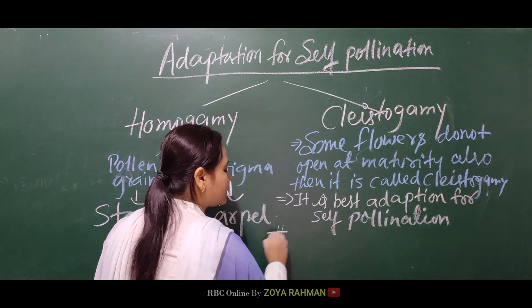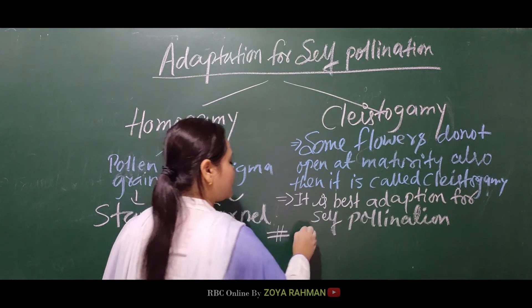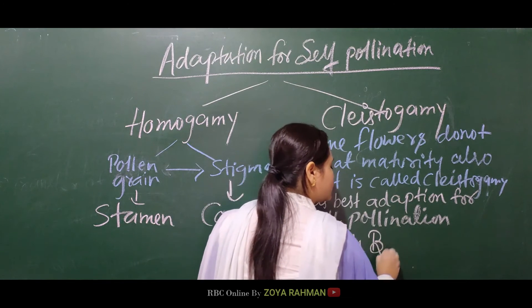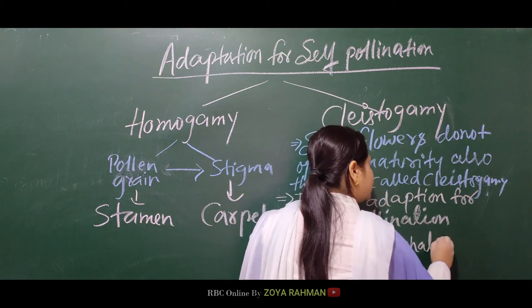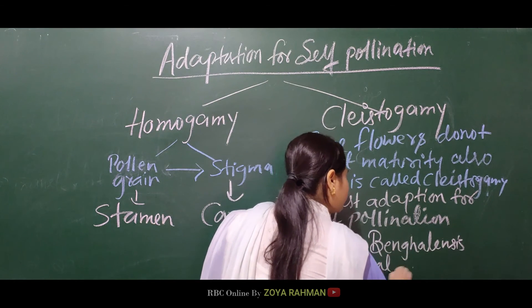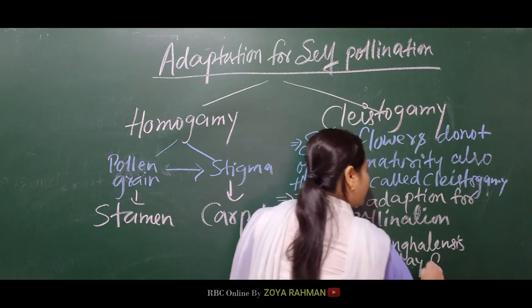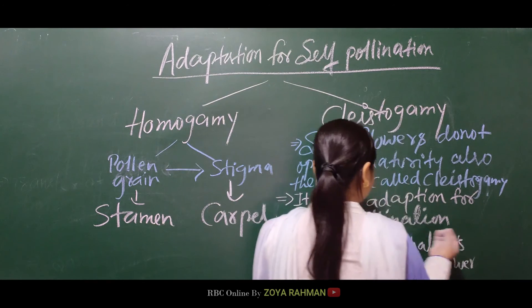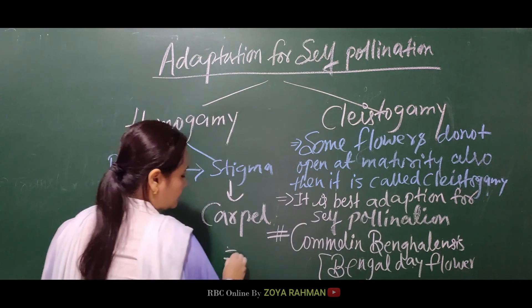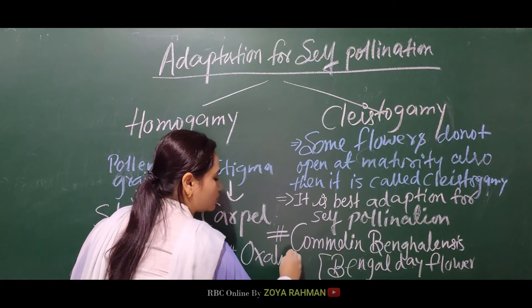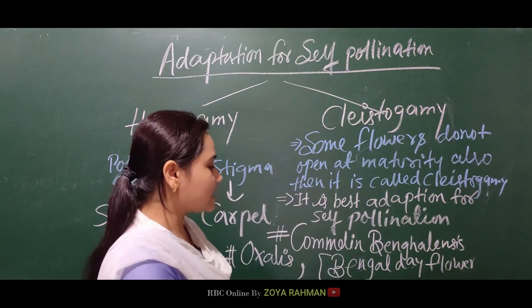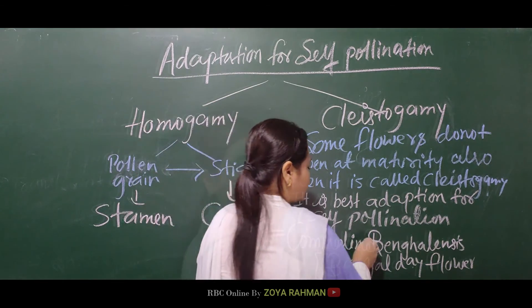The most important example of cleistogamy is Commelina bengalensis. This flower is known as the Bengal day flower, and it is the classic example of a cleistogamous plant.